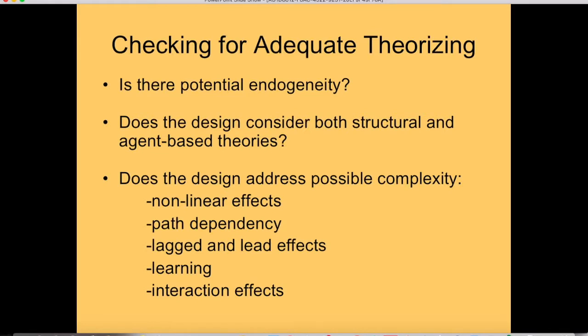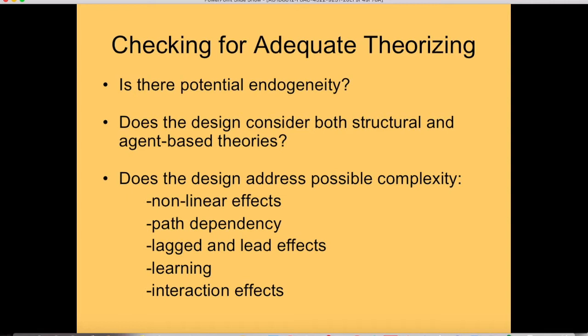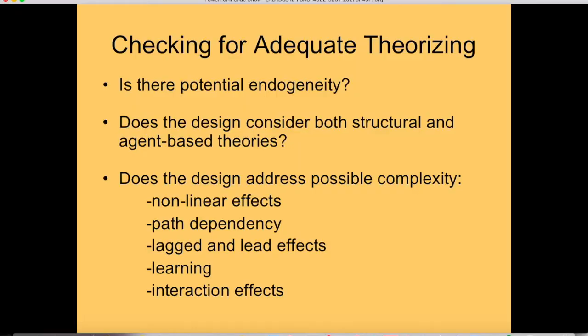We can also ask whether we've anticipated potential kinds of complexity. Path dependency, where the order in which things happen matters to the ultimate outcome. Nonlinear relationships, where something has a small effect until it reaches a threshold and then there's a big effect, or it diminishes over time. There may be lagged or lead effects, especially where people are anticipating things and that drives behavior. There can be self-fulfilling prophecies, self-denying prophecies, learning effects where behavior changes over time, and high-order interaction effects where the effect of any one variable depends on the values of the others.